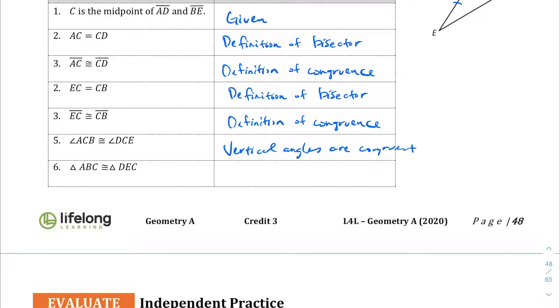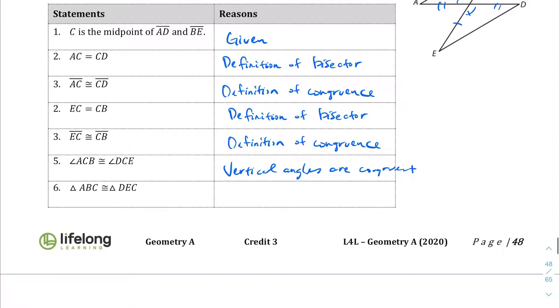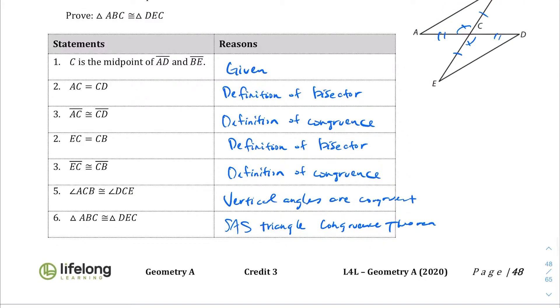Vertical angles are congruent. And lastly, triangle ABC is congruent to DEC. Well, that's our side angle side triangle congruent statement. Not statement, theorem. Right, because we have, we are told a side, side, we have the angle and then we have the side being proven here.